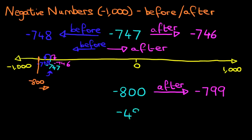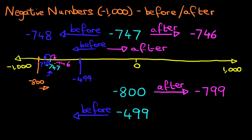We're going to look at one more example. Suppose we've got minus 499. The question this time is, what number comes before this? What number comes before minus 499? Let's find this on the number line. It should be about here, I think. Minus 499.